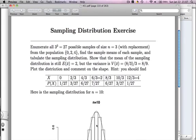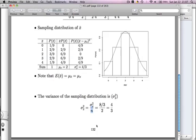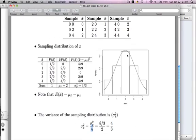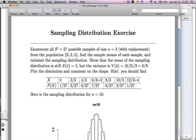Now, let's turn up the sample size a little bit. Using this exact same population of 0, 2, and 4, let's enumerate all three to the third, which is 27 possible samples of size 3. So what would happen if I drew a sample of size 3?